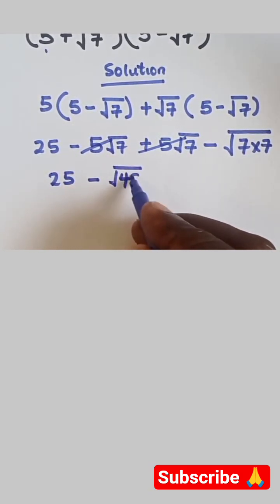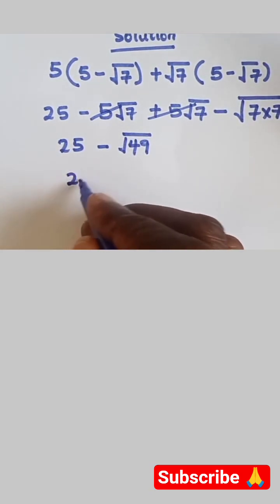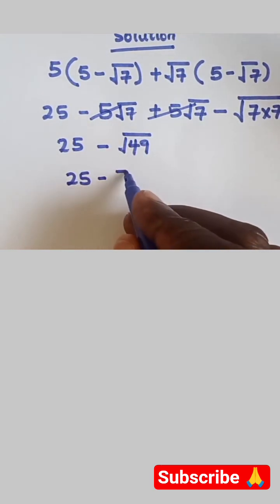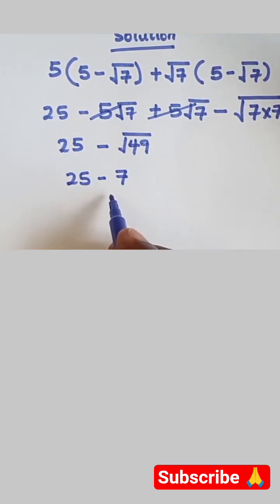This together gives us 49. Seven times seven is 49, and the square root of 49 is 7. We have 25 - 7, which gives us 18. So the final answer is 18.